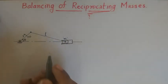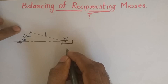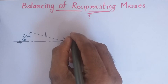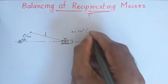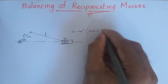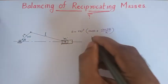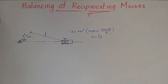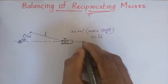As studied in dynamic force analysis, whenever the crank is rotating with Omega making angle theta with the horizontal, the acceleration of the piston or slider is given by r·Omega² into (cos θ + cos 2θ / n), where n is the ratio of the length of the connecting rod to the crank radius. This is the acceleration the slider attains, moving either forward or in the opposite direction.